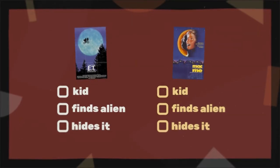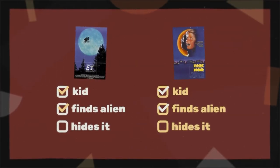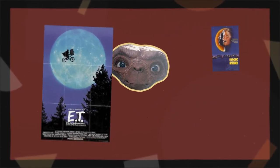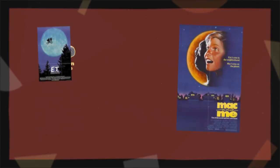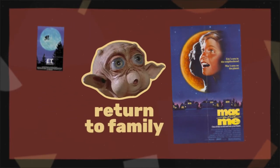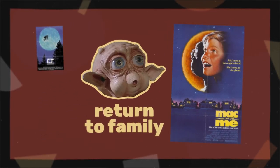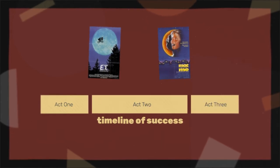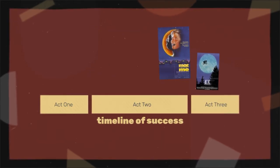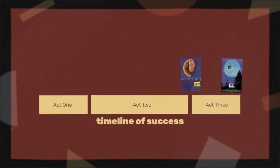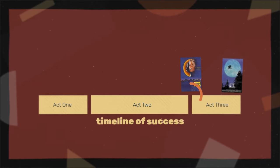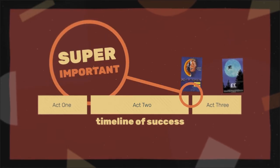Even though both these movies are about a kid finding an alien and hiding it, the plots have some key differences. First, in E.T., Elliot is trying to help E.T. return home, whereas in Mac and Me, Eric is trying to reunite Mac with his alien family. Secondly, in E.T., Elliot doesn't succeed until the end of the movie, whereas Eric finds Mac's family at about the three-quarter mark. This three-quarter mark is super important.